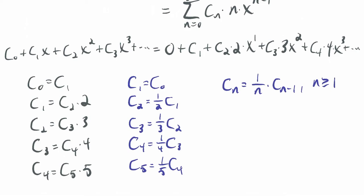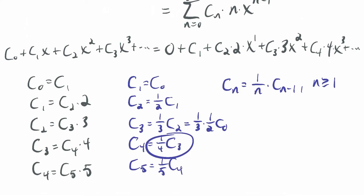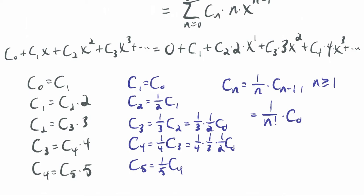This is a recursive definition for the sequence. If you think about it, c3 is 1/3 times c2, but c2 is 1/2 times c1. So c3 equals 1/3 times 1/2 times c0, and c4 equals 1/4 times 1/3 times 1/2 times c0. It turns out that cn equals 1 over n factorial times c0. Since c0 is 1, cn equals 1 over n factorial — that's the closed form.